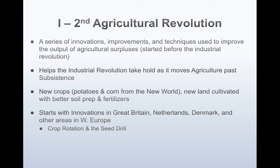Crop rotation would be the idea of — it's kind of a step past slash-and-burn and the other practices used earlier. Crop rotation: if certain plants depleted the nitrogen in the soil or certain elements present in the soil, they would rotate with a crop that would replenish it or would not need those certain elements. So crop rotation just took better care of the soil in general.